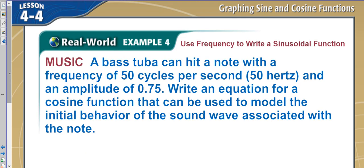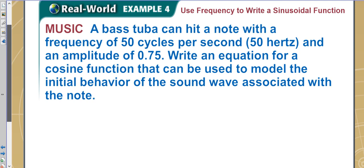Let's try this one. It says a bass tuba can hit a note with a frequency of 50 cycles per second, so the frequency is 50 hertz. And the amplitude is 0.75. Write an equation for the cosine function that can be used to model the initial behavior of the sound wave associated with the note.